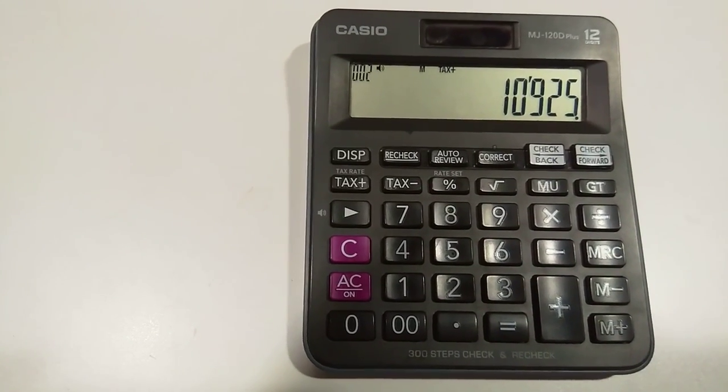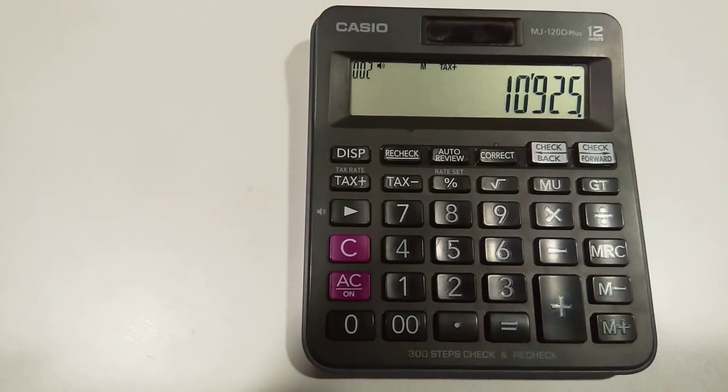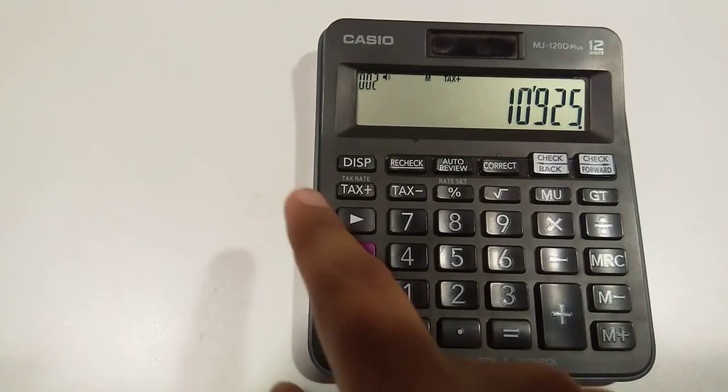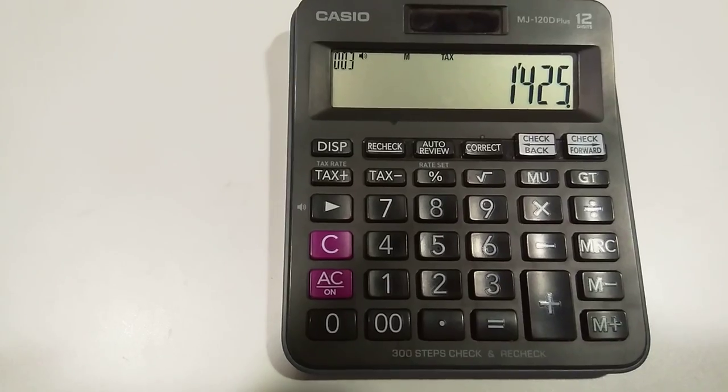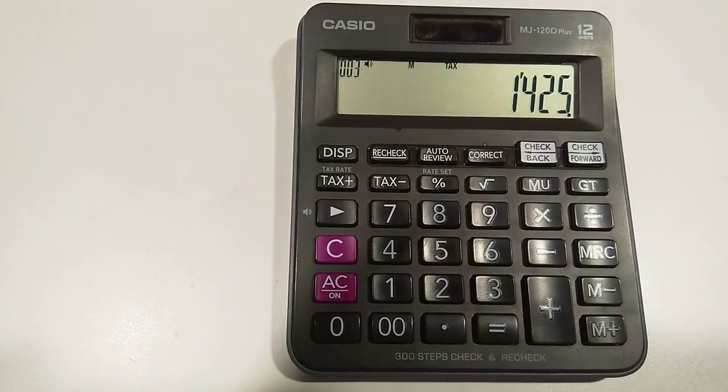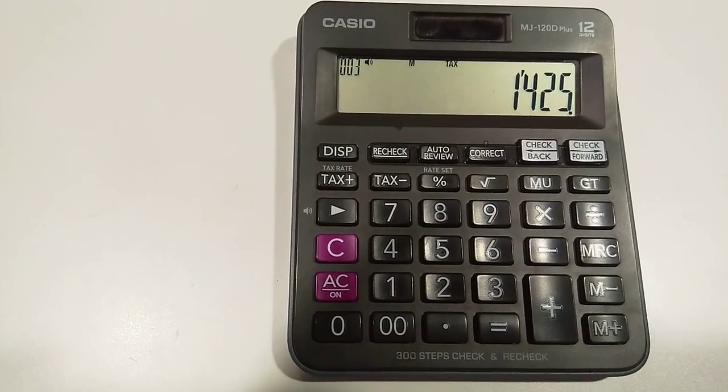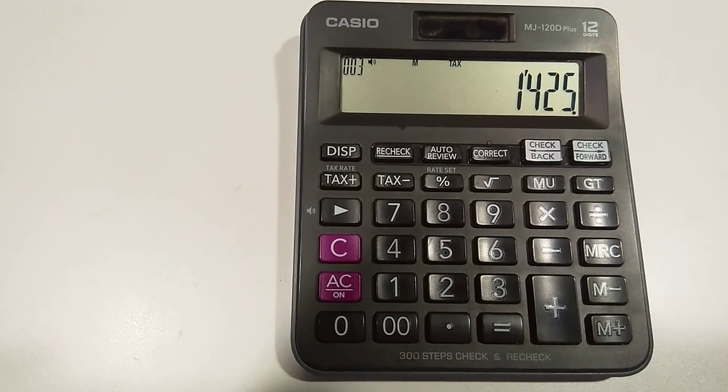If you want to calculate how much is the total tax I have to pay, just press this button again. So 1425 is the 15% tax rate you have to pay to the shopkeeper for 9500 worth of product.